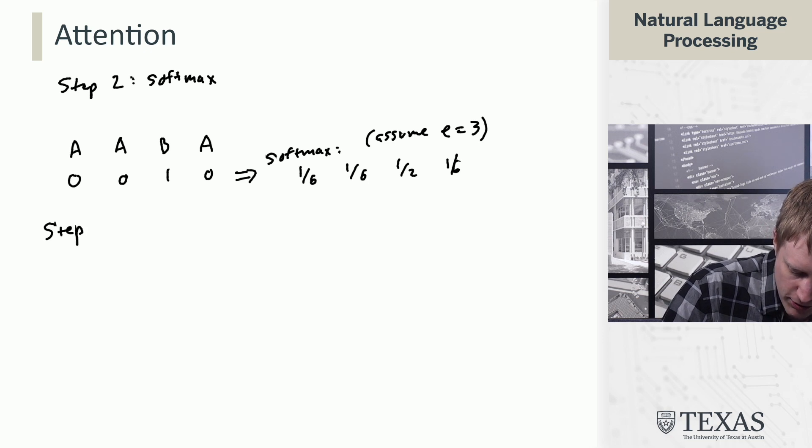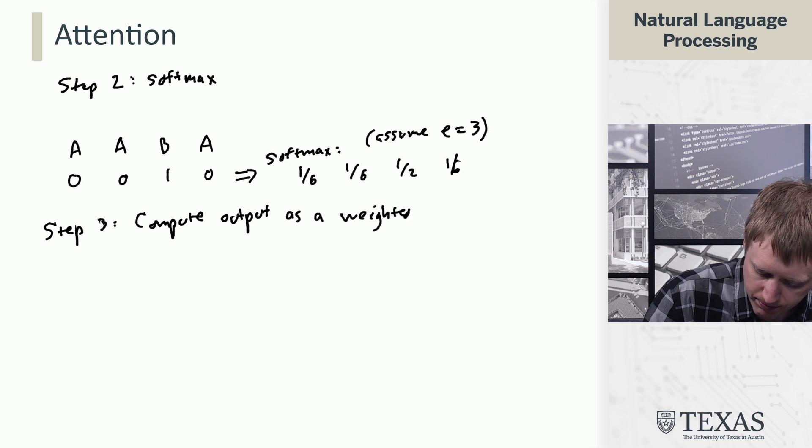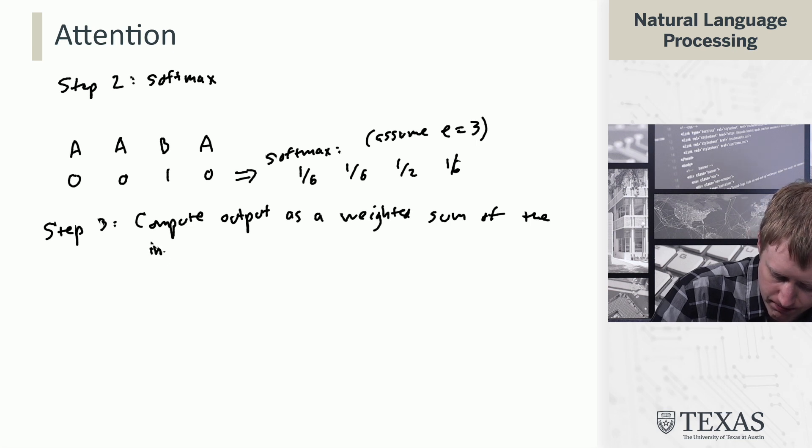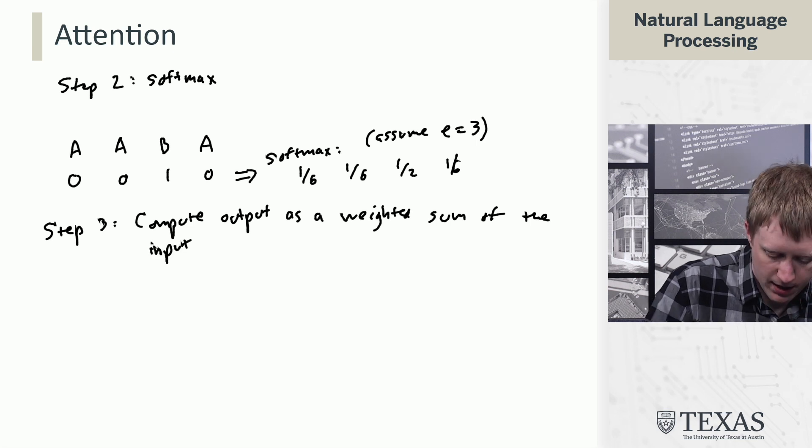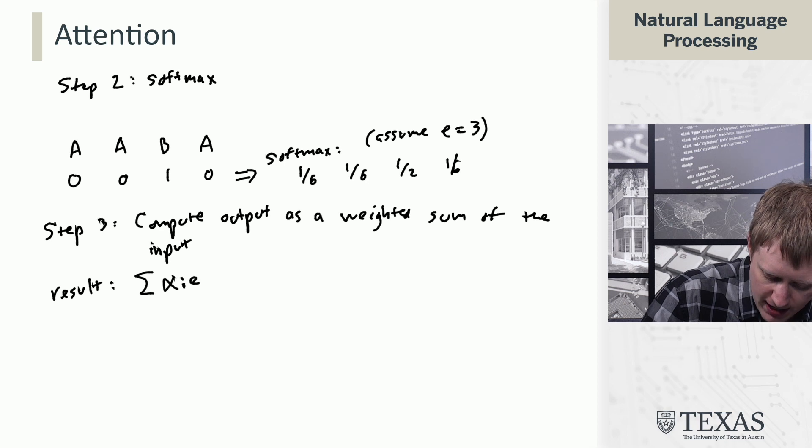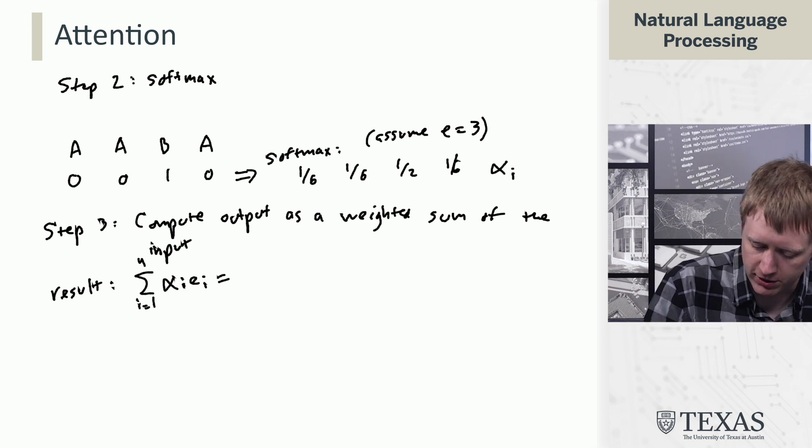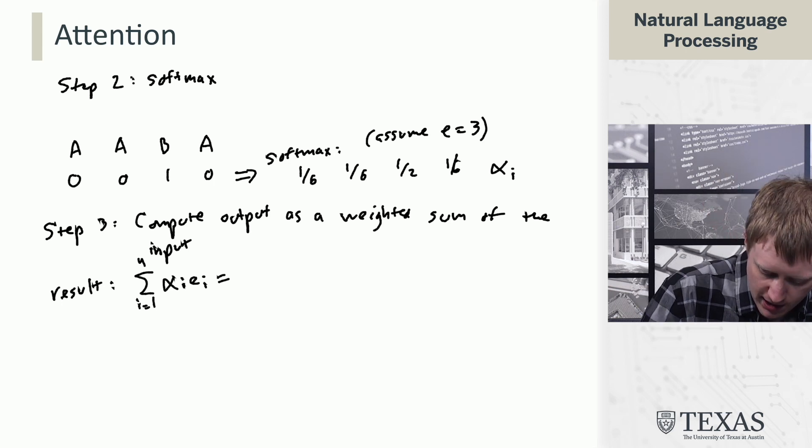And then, for step 3, we compute output as a weighted sum of the input. And so, what this means is that the result is going to be the sum of alpha_i times E_i from i equals 1 to 4 here. And we're going to denote this vector of probabilities as alphas.